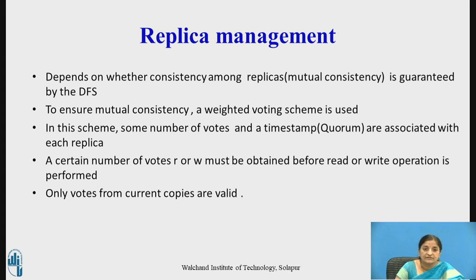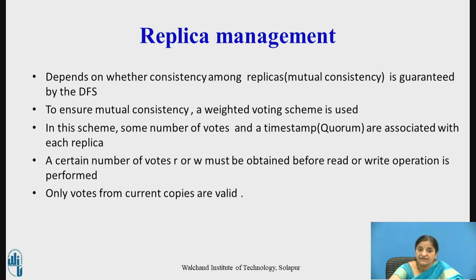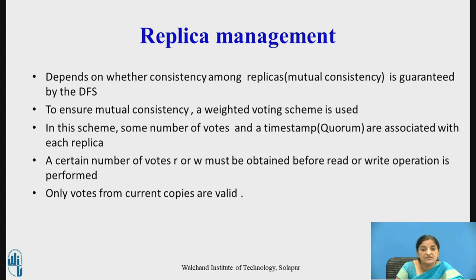Replica management involves creating and managing multiple replicas of files, and also depends on whether mutual consistency among replicas is guaranteed by the distributed file system. To ensure mutual consistency, a weighted voting scheme is used. In this scheme, a number of votes and a timestamp — also known as a quorum — are associated with each replica. Every replica has a read quorum (R) and a write quorum (W), and a certain number of votes must be obtained before a read or write operation is performed on that replica.